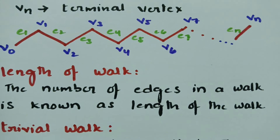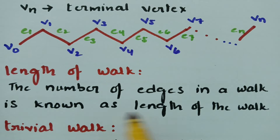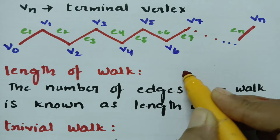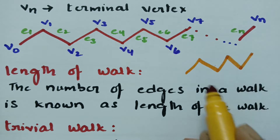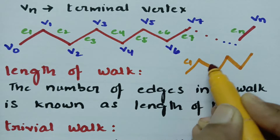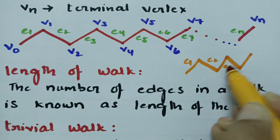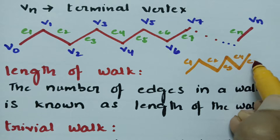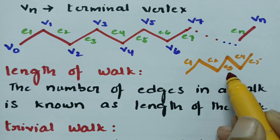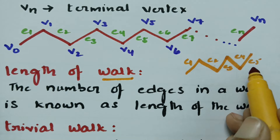What is the length of the walk? The number of edges in a walk is called the length of the walk. For example, if I take a walk with edges E1, E2, E3, E4, and E5, then the number of edges is 5. So the length of the walk is 5 in this example.